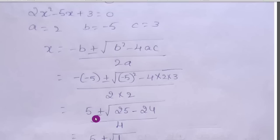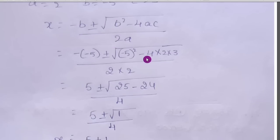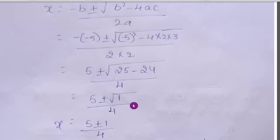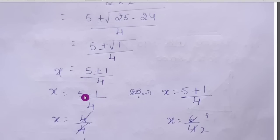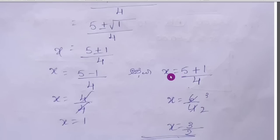Find the roots of 2x² − 5x + 3 = 0 using the quadratic formula. Here a = 2, b = −5, c = 3. Using x = (−b ± √(b² − 4ac)) / 2a: x = (5 ± √(25 − 24)) / 4 = (5 ± √1) / 4 = (5 ± 1) / 4. Therefore x = (5 − 1)/4 = 1 or x = (5 + 1)/4 = 3/2.